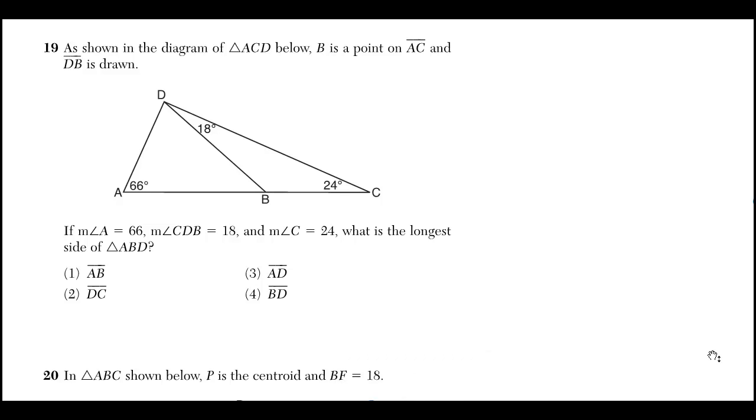As shown in the diagram of triangle ACD below, B is a point on AC and DB is drawn. Why do they do this? If the measure of angle A is, yeah, it's all there. What is the longest side of ABD?